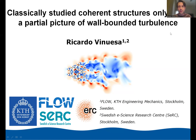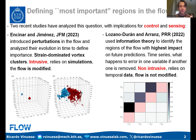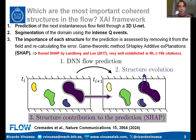This follows up on some of our previous research work. We're interested in answering the question: what are the most important regions of the flow? On one hand, Tuerán and Jiménez have studied this with intrusive methods; on the other hand, Lozano-Durán and Arranz have been studying it using information theory and causality. We use an intrusive method on a surrogate, combining both approaches.